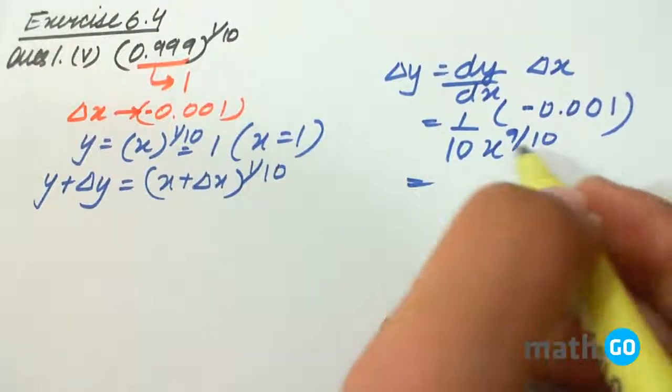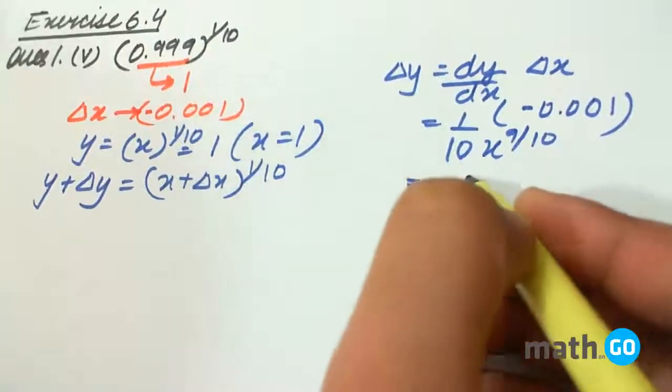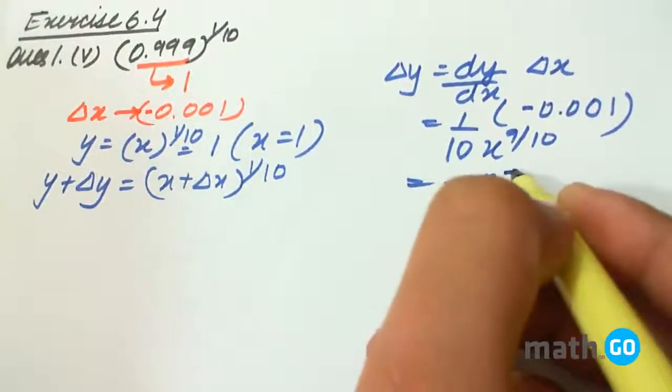x to the power 9 by 10, that is 1 to the power 9 by 10 is 1, so our answer will be minus 10 to the power minus 4.